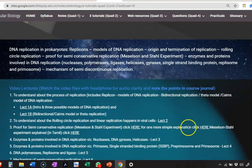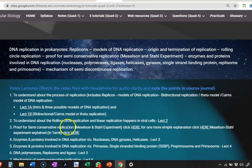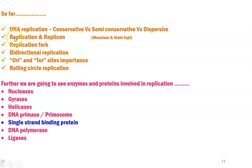Even certain simple explanations are available, and some explanations in the Tamil language are also available, which will help you understand the concept well. Next, we have seen about replication — what is a replicon structure, what is a replication fork, and the two different types of replication: bidirectional replication and rolling circle replication.